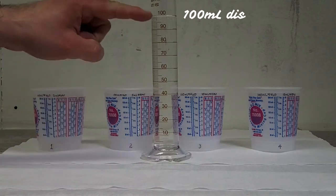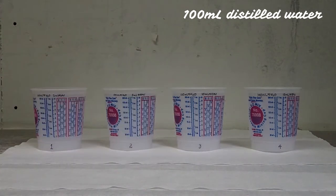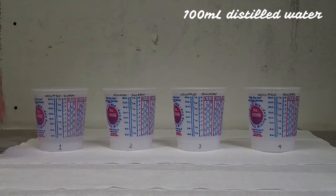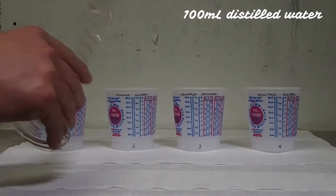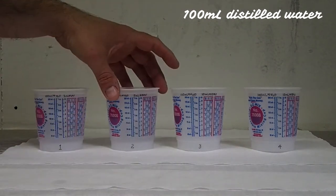Hello, now we are going to learn how to generate the emulsifier concentration chart. For that, we are going to use four samples, each sample will have 100 ml of distilled water. To measure the volume I am using this graduated cylinder.